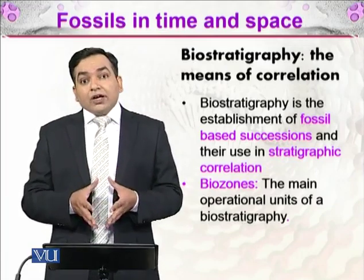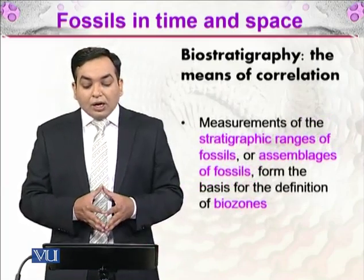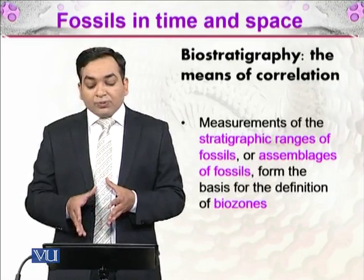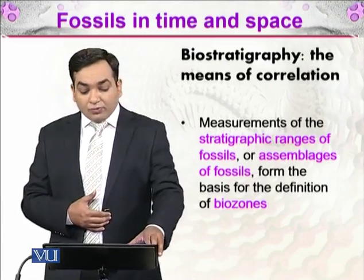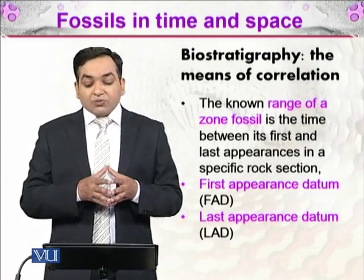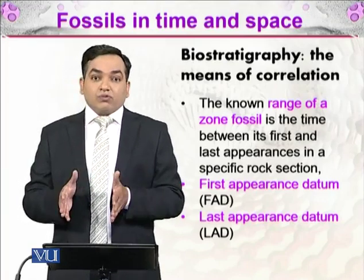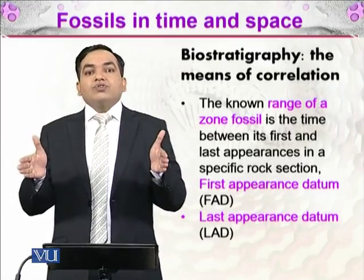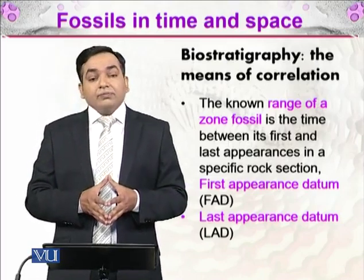The biozone is the main operational unit of biostratigraphy. The measurement of the stratigraphic ranges of fossils or assemblages of fossils forms the basis for the definition of a biozone. The known range of a zone fossil is the time between its first and last appearance in a specific rock section — that is, when an organism first appeared and when it became extinct — and that range is called the range of the zone fossil.